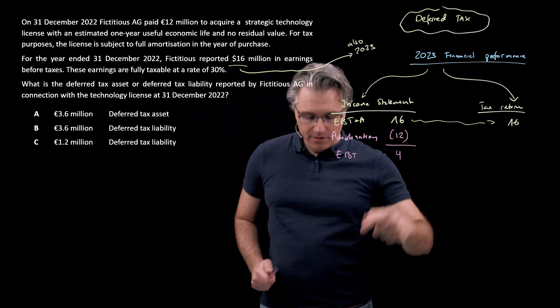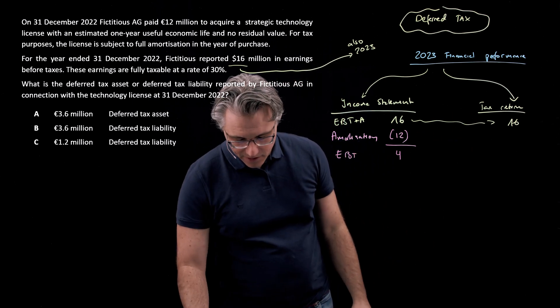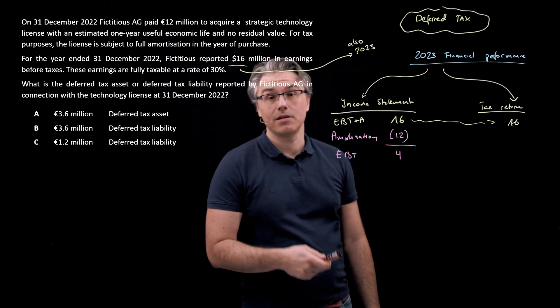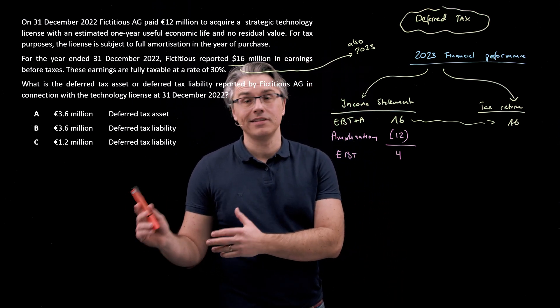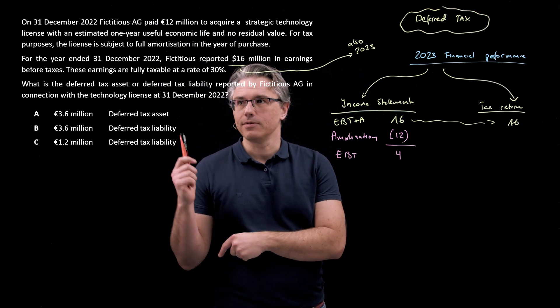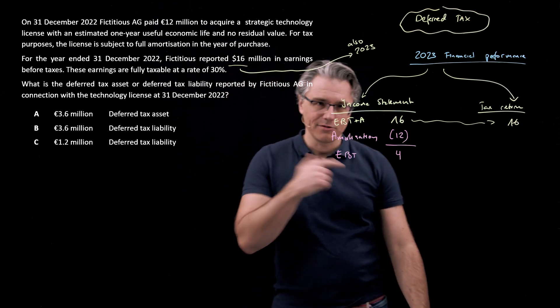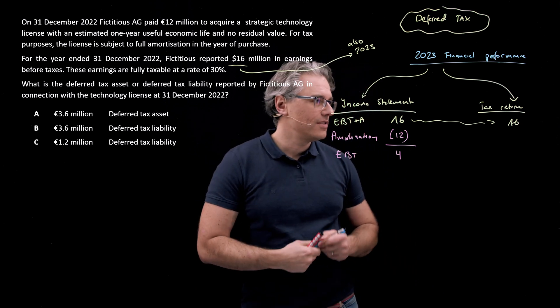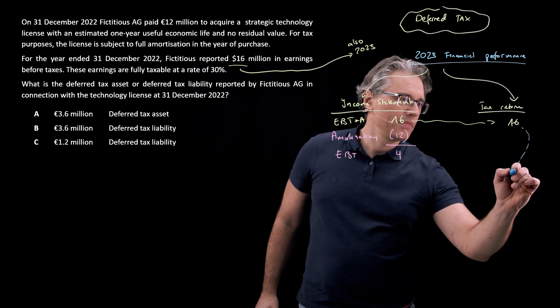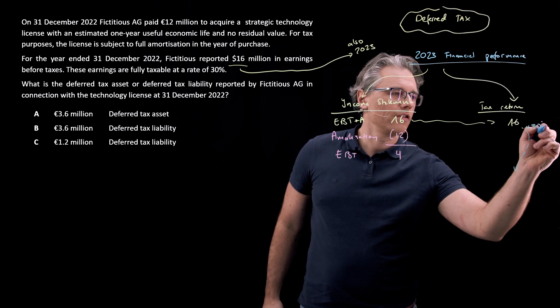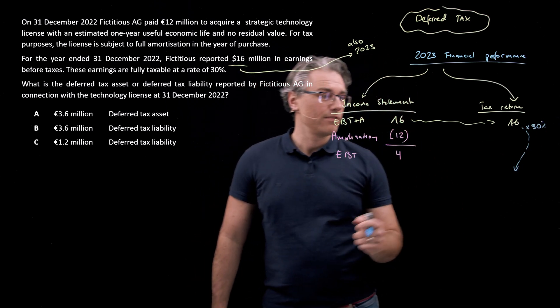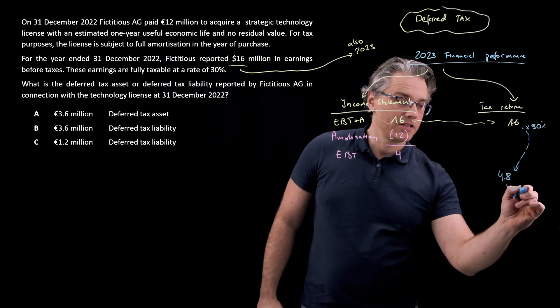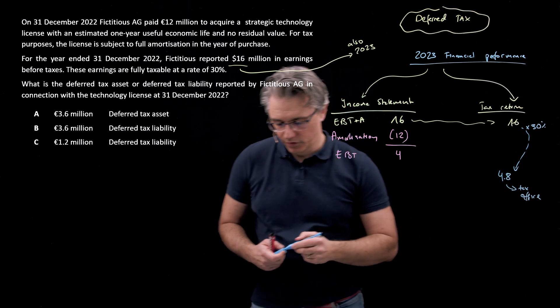From a tax return perspective, there will be no amortization expense or charge because amortization has already been computed and deducted in the year 2022, the year of purchase. That's what we did in the previous video. So our tax computation will simply be based on this 16 million times 30. And this is 1.6 times 3. So 4.8 million payable to the tax office.